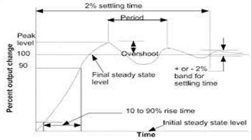For this step input, the instrument output responds by going beyond 100% output change — it overshoots, then comes down, then goes up again. The difference between two consecutive peaks is called the period. The overshoot and undershoot beyond the maximum point gradually reduce and the output settles down over time.